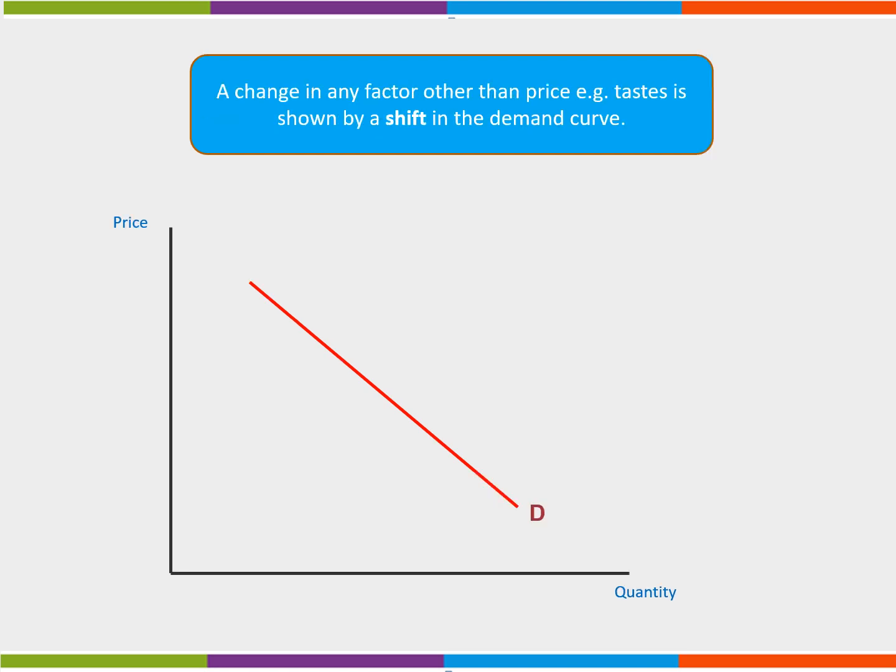A change in any factor other than price, such as consumer income, the price of other goods, or taste and fashion, is shown by a shift in the demand curve. An increase in demand can be seen by a shift in the demand curve downwards and to the left from D to D2.